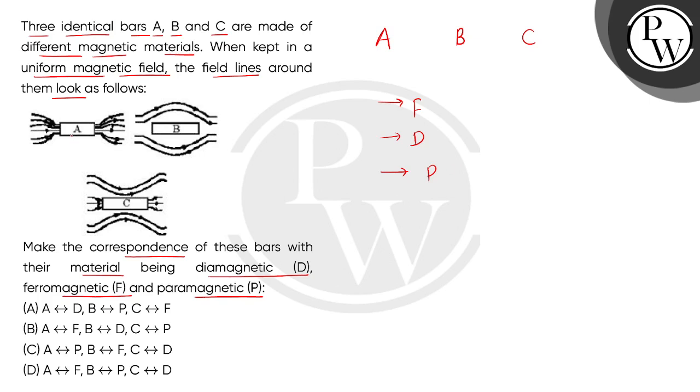So children, if we check material A, we can check that when material A when field lines enter, then the entire lines are passed from material A and then they will exit. So it means this material is ferromagnetic, which has the highest permeability.